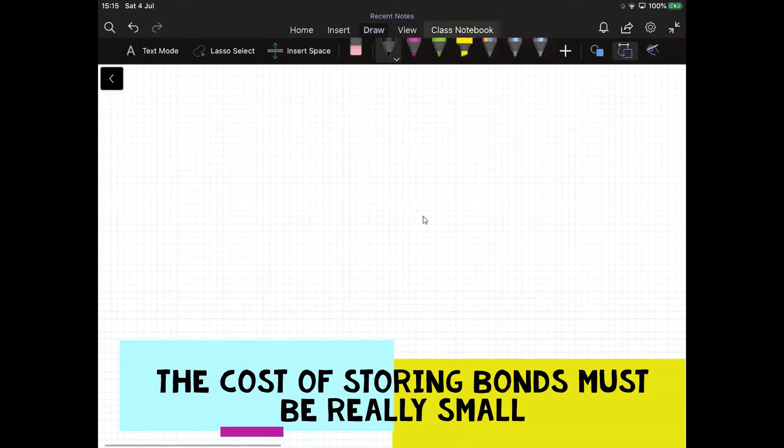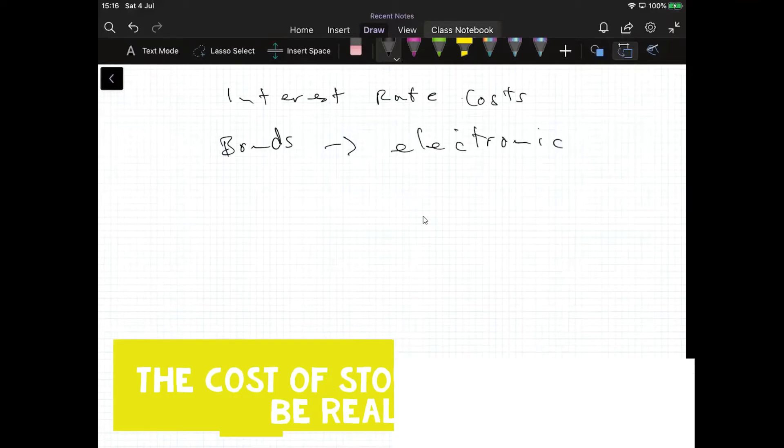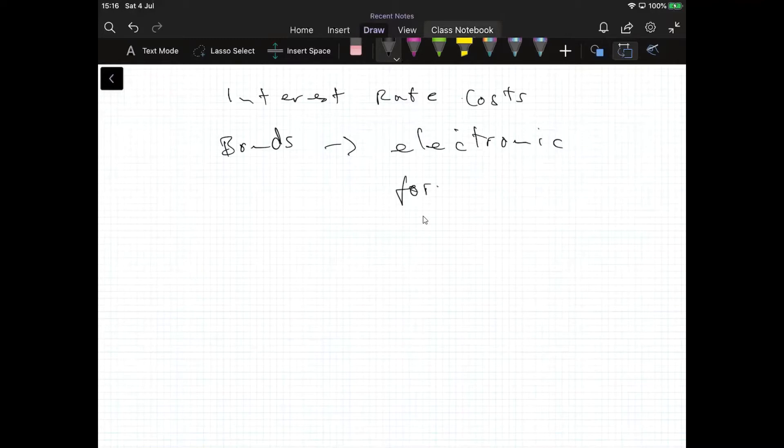If we can ignore storage costs and just maybe look at purely interest rate costs, there are storage costs obviously for oil and certain commodities. But if we looked at bonds where the cost of storage, bonds trade very often today not even in paper form but in electronic form, and the cost of storing or registering is absolutely infinitesimal.